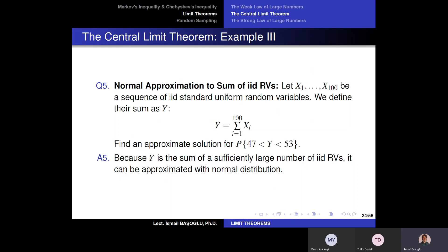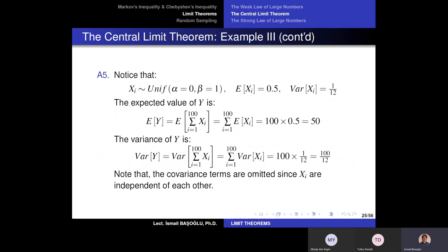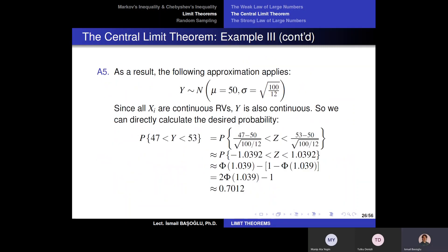The previous random variables — binomial and Poisson — were discrete. Therefore, for each integer value, I applied the ±0.5 continuity correction procedure. But here I am not going to apply it, because Y is already continuous.